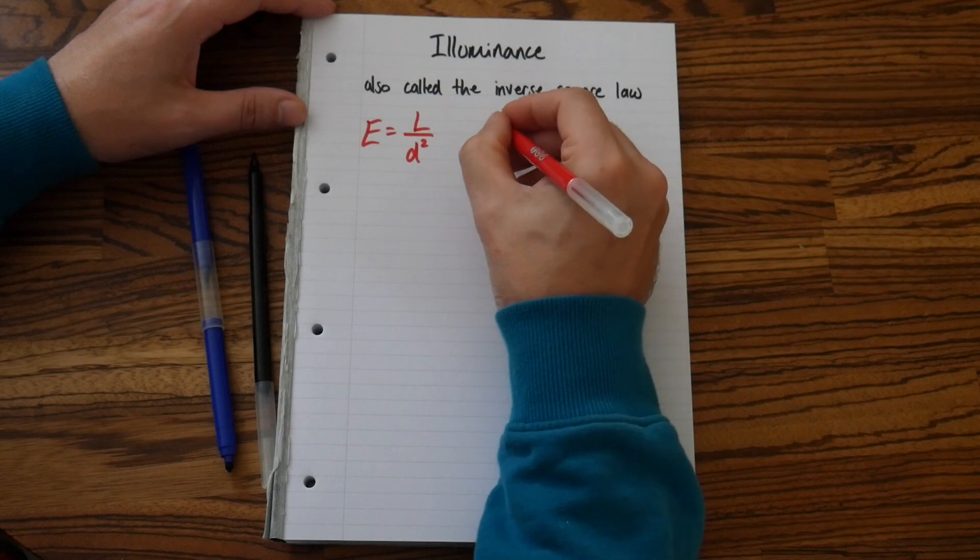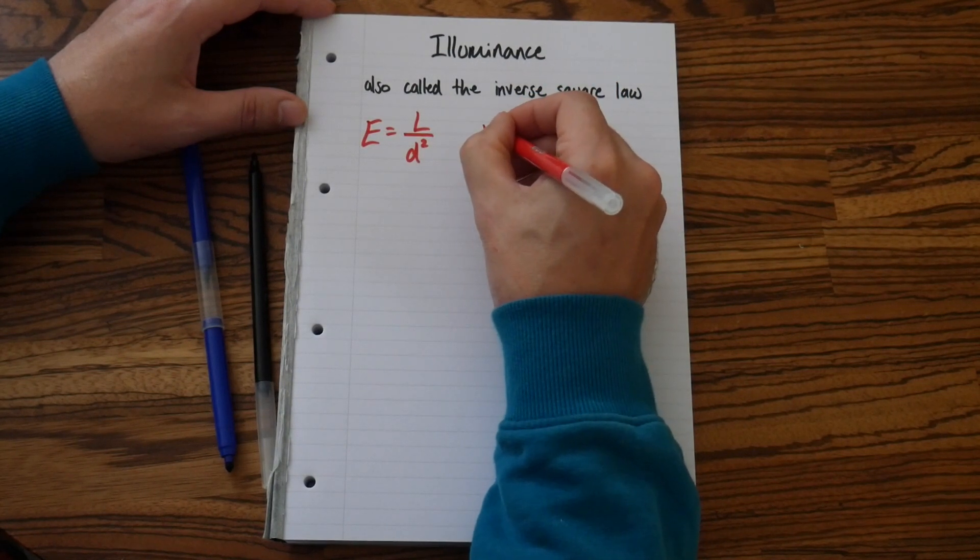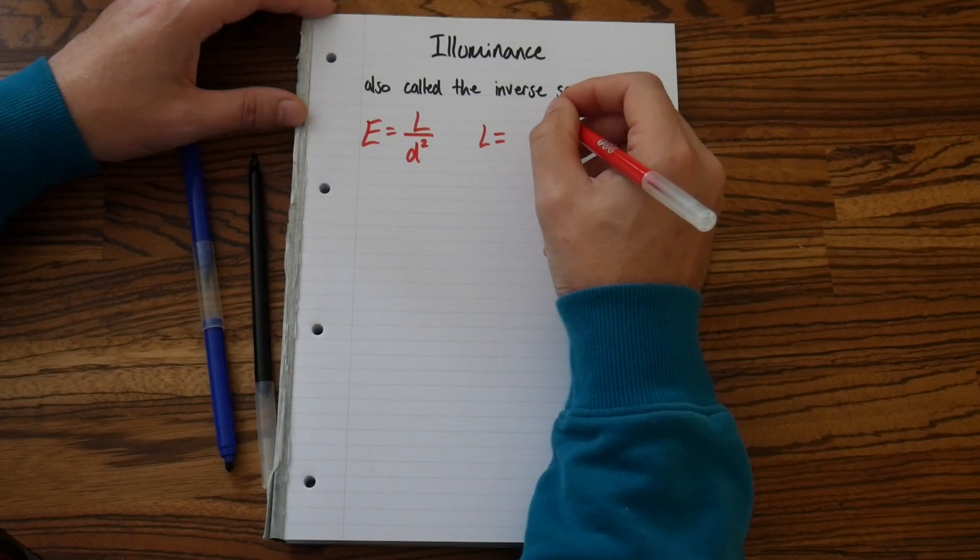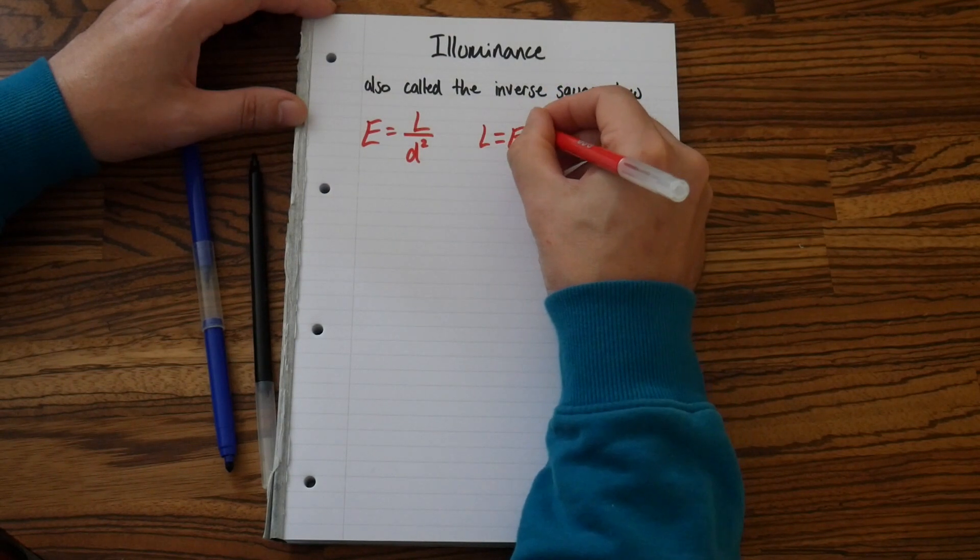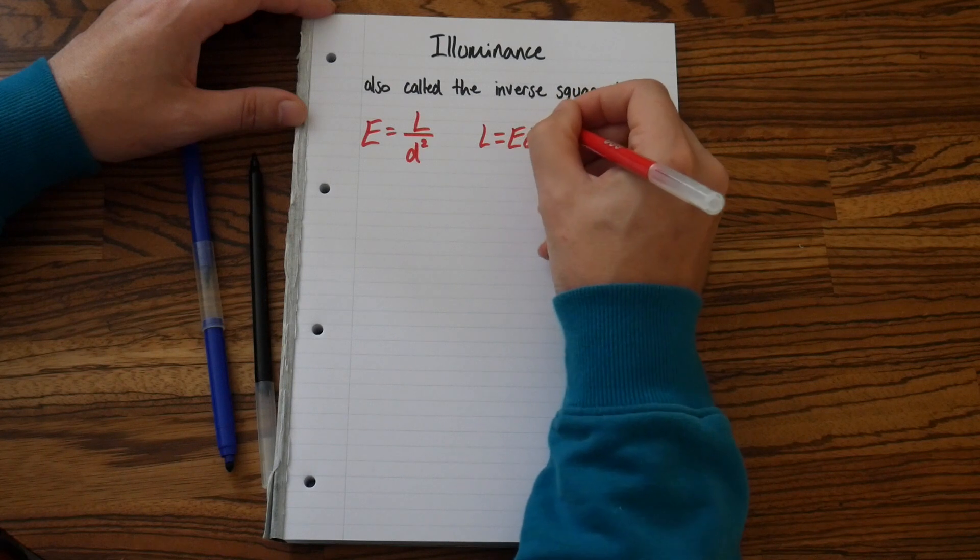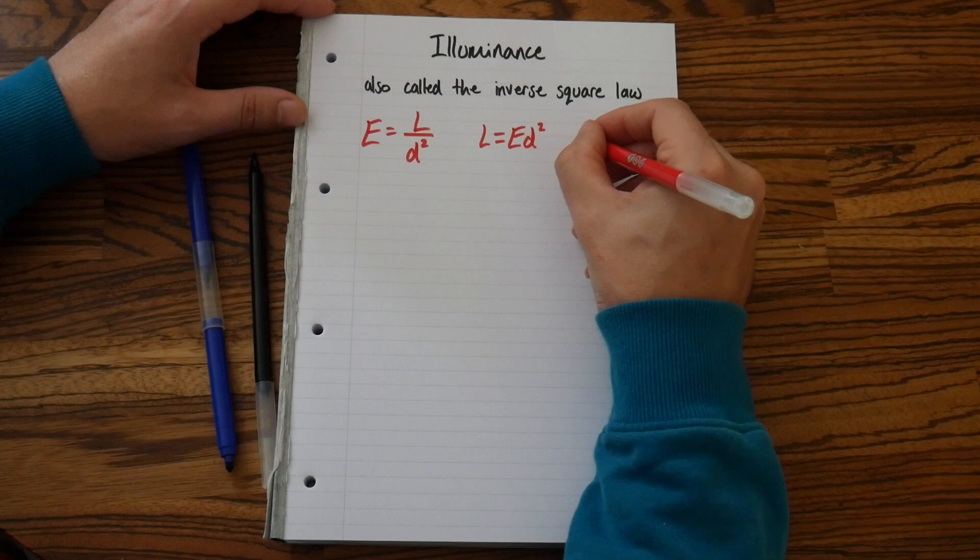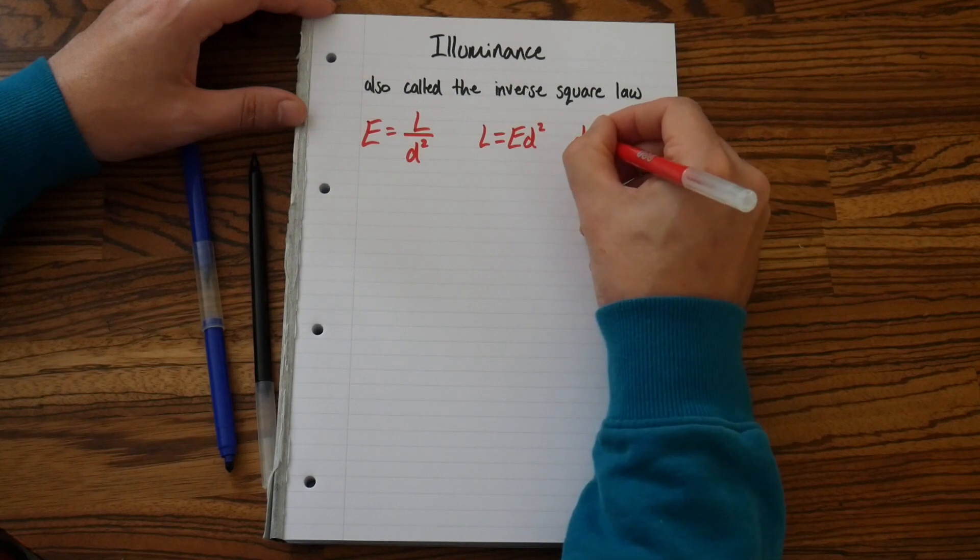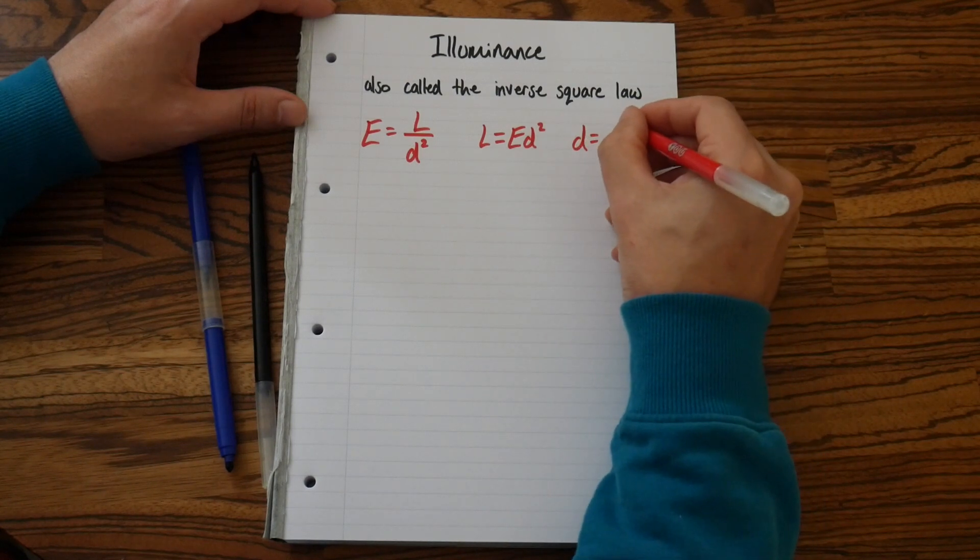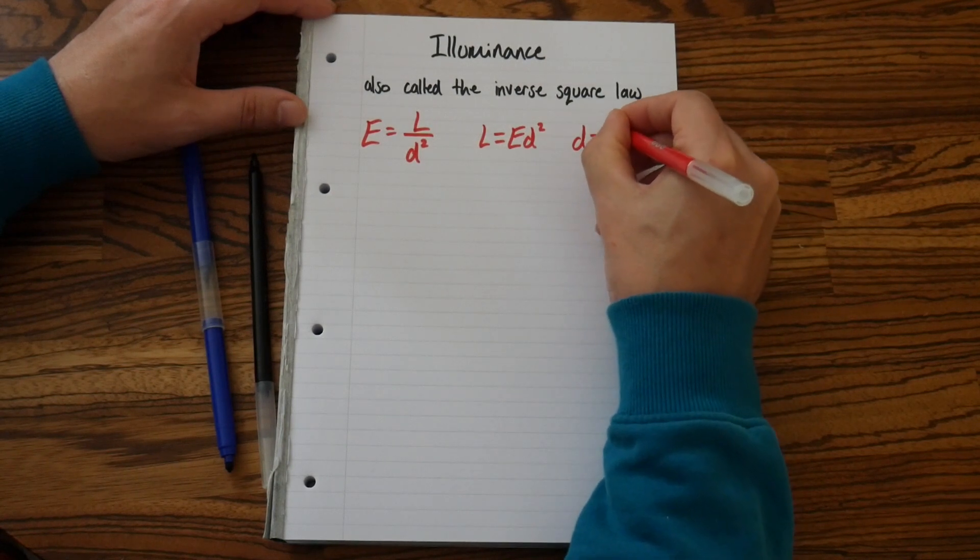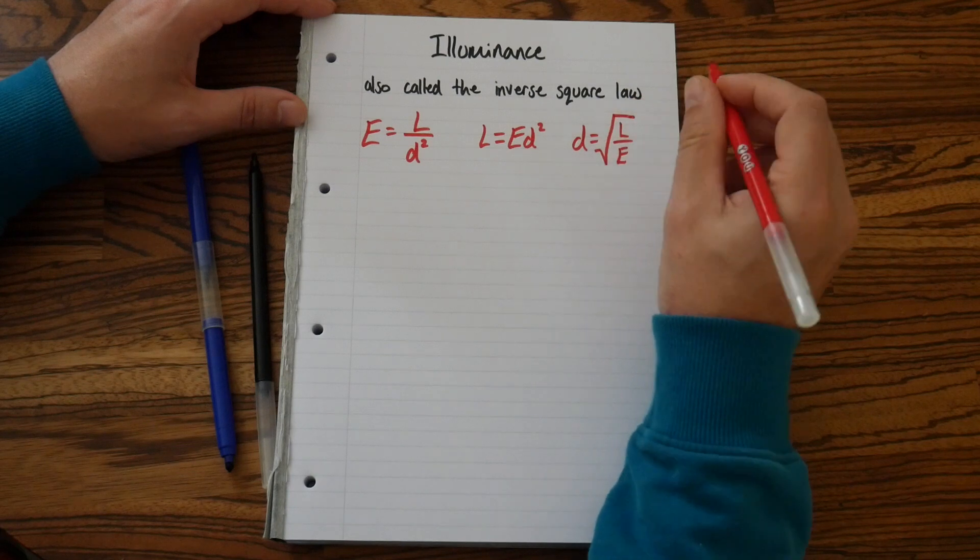And then that leads us with L equals capital E, sorry, with lowercase d squared. And the last one will be a lowercase d. It's L over E all square root.